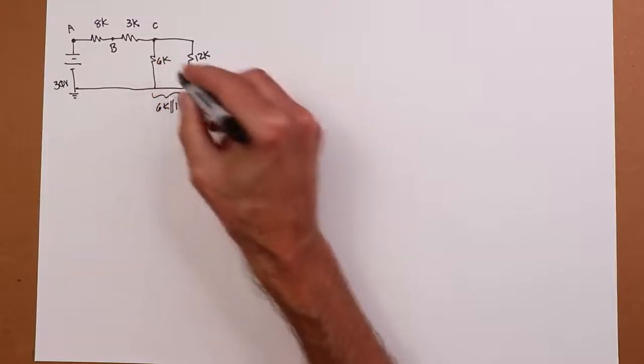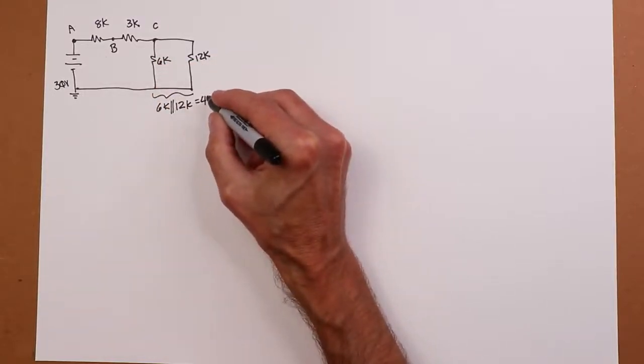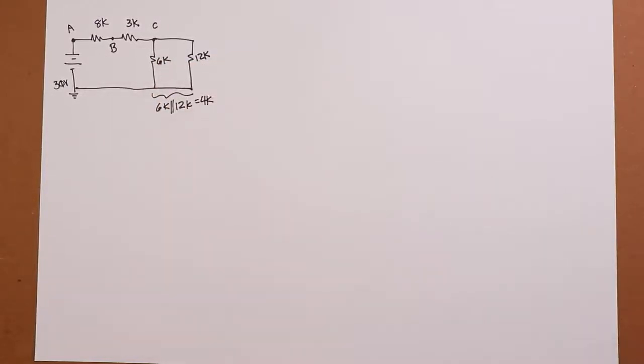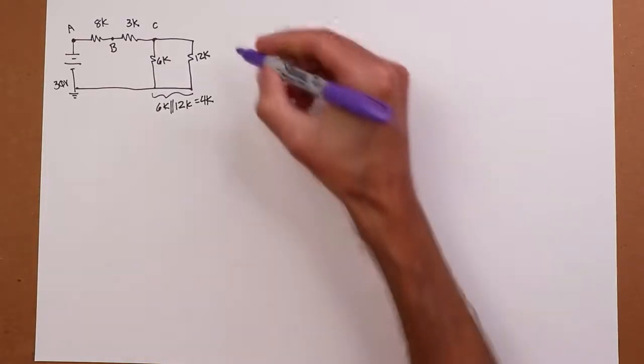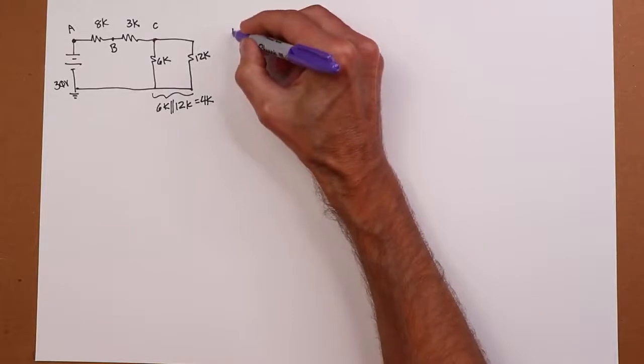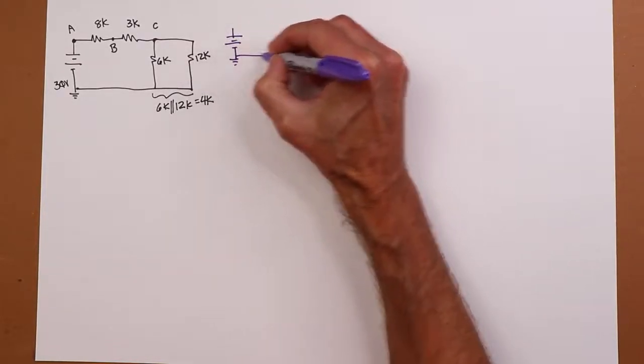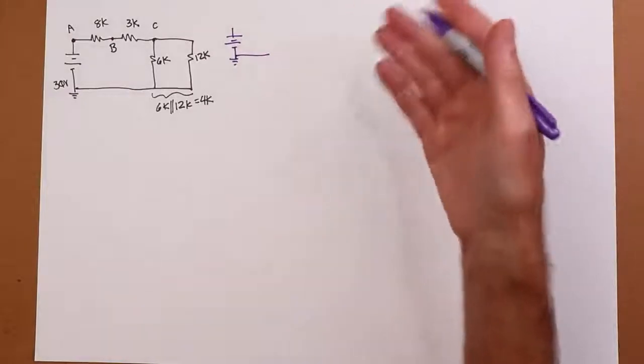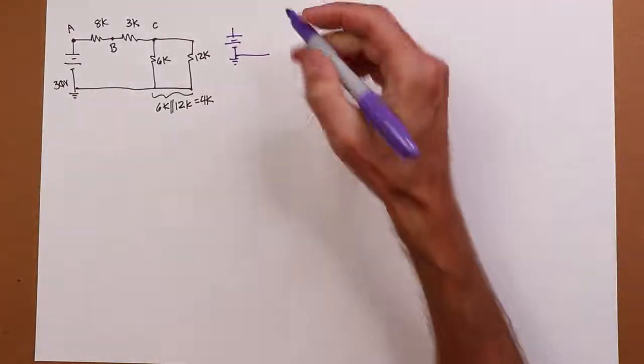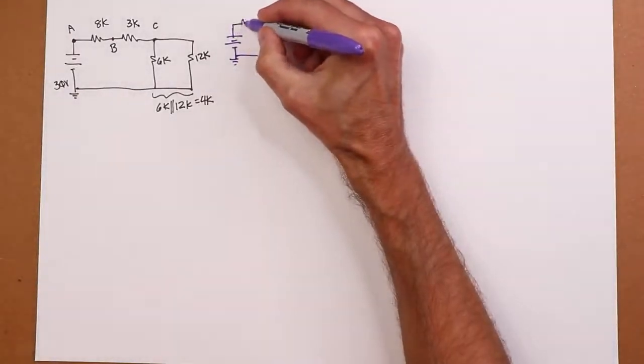So I'm just going to say, all right, let me just think of that as one resistor, 6 in parallel 12. 2 to 1 ratio, it's going to be 2 thirds of 6K, which is 4K. So I'm going to redraw this. And you could maybe do this in a couple of steps, or one step. You know, the more experience you get with this, the more you'll actually be able to just sort of do it in your head.